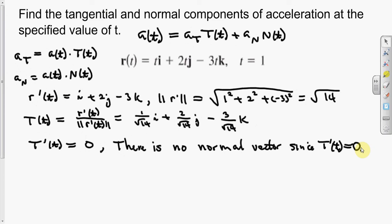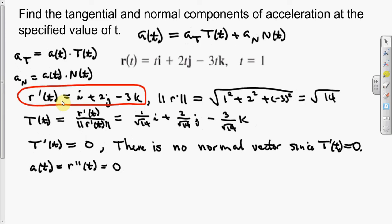What can we find from this? Well, notice that when you find the acceleration, r double prime of t, it also comes out to be zero working from that r prime. And so not much here. If I ask the question why doesn't this have acceleration or a normal vector — it's constant velocity. R of t is a line, but its derivative is just a constant number, and so obviously its second derivative, the acceleration, is zero.